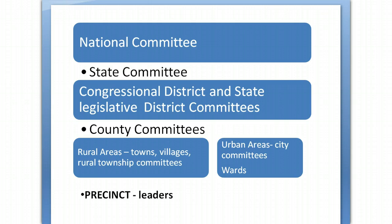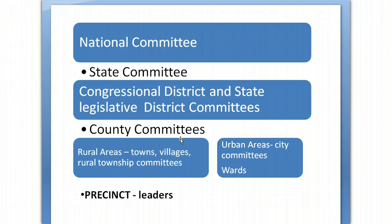Parties are also interesting because they're not centralized — the local precinct or county level is no more or less important than the national committee. They have different roles and functions, but they're all joined together to get their candidate elected. The lowest level, so to speak — although there's no strict hierarchy — are the precincts, which operate at the neighborhood level.